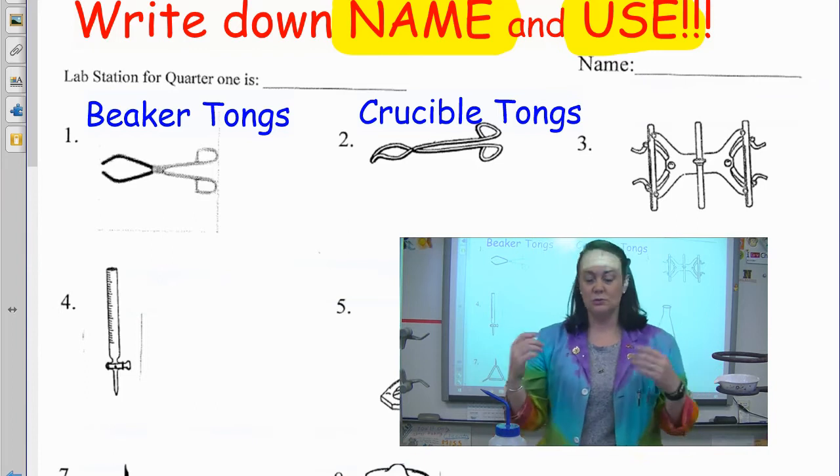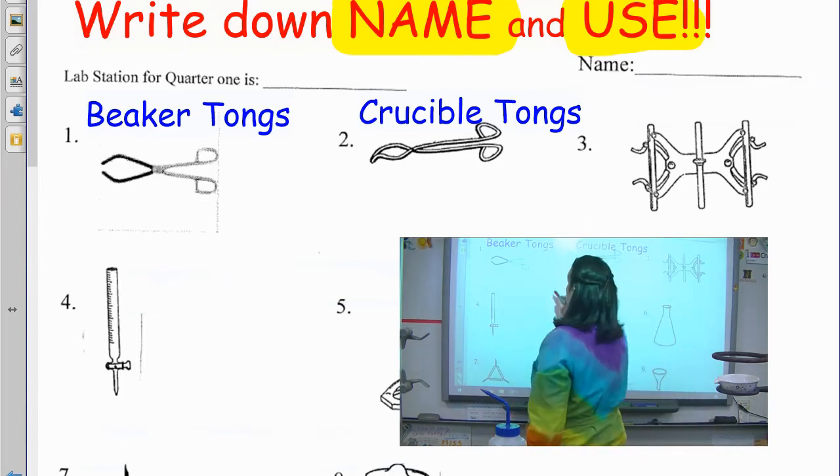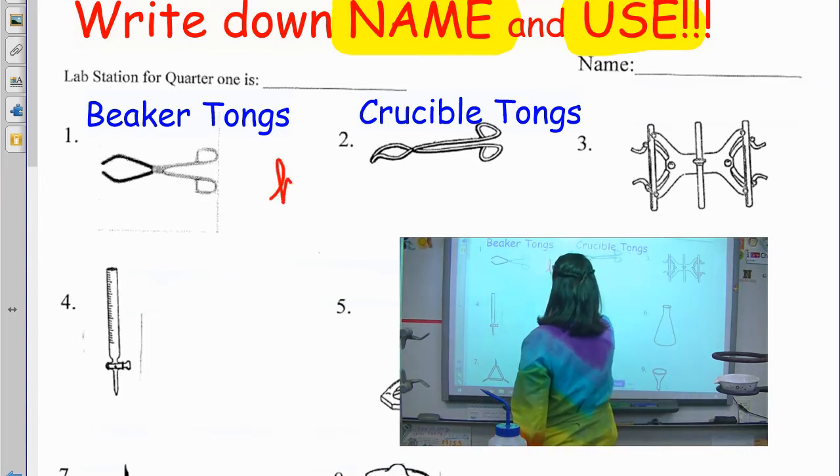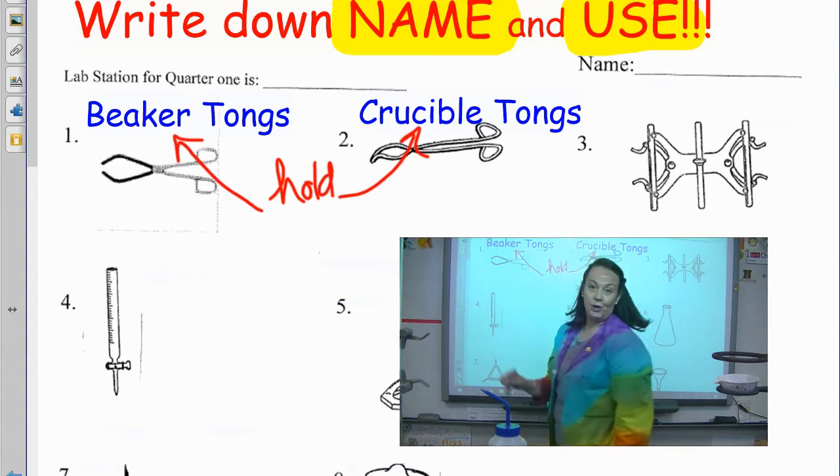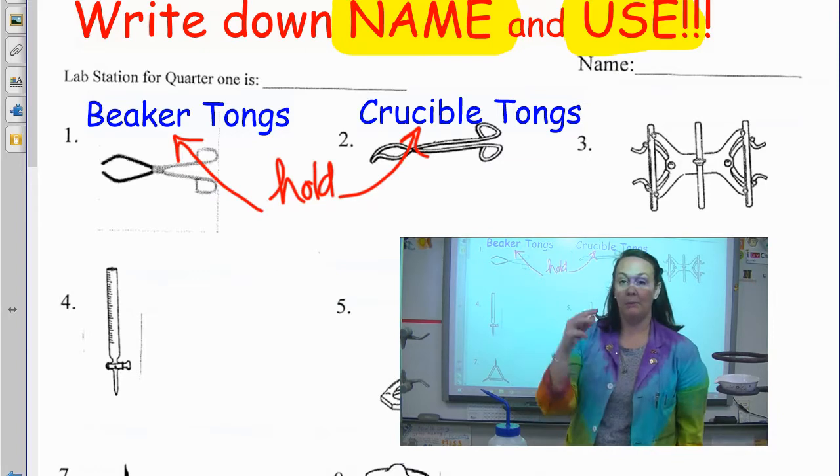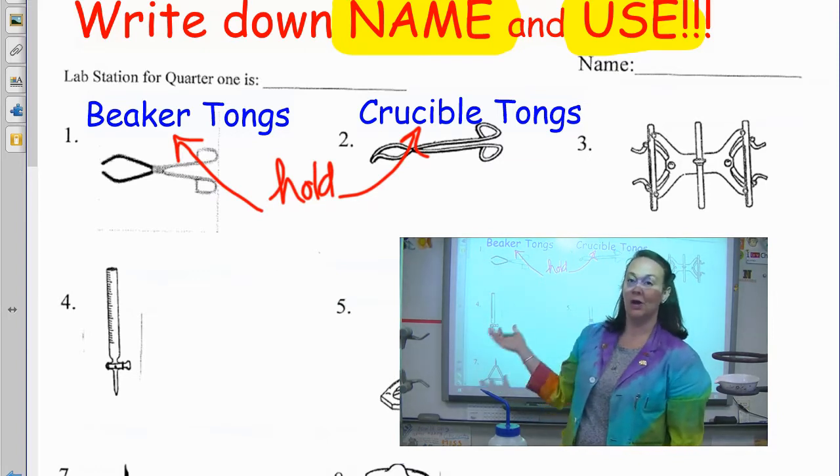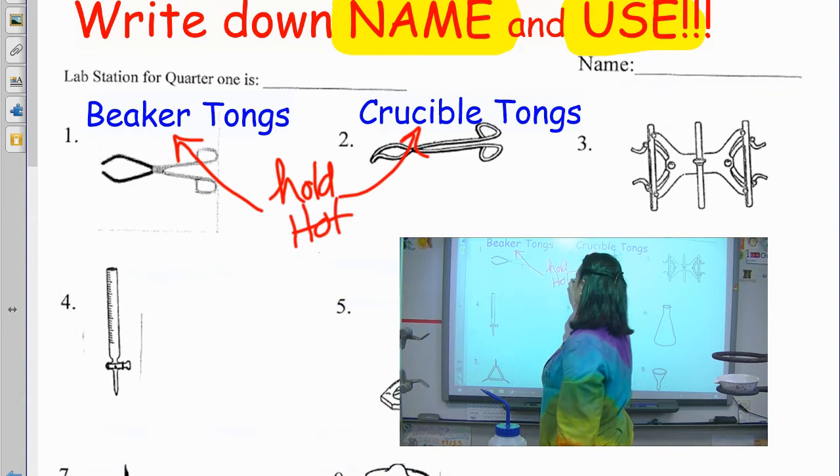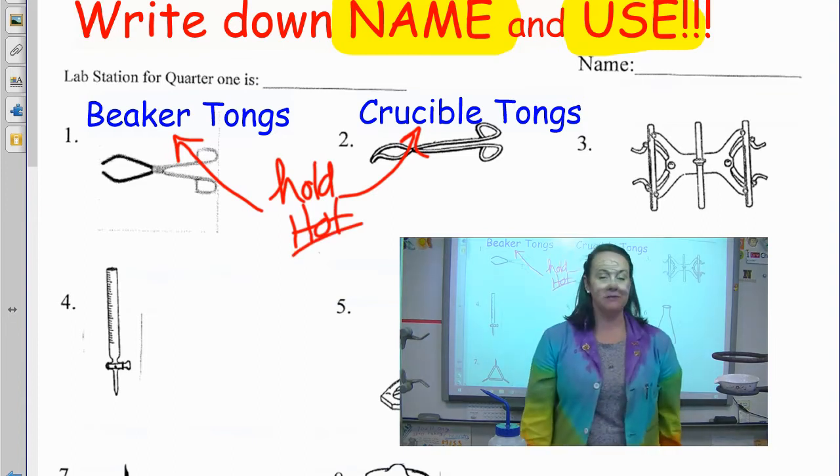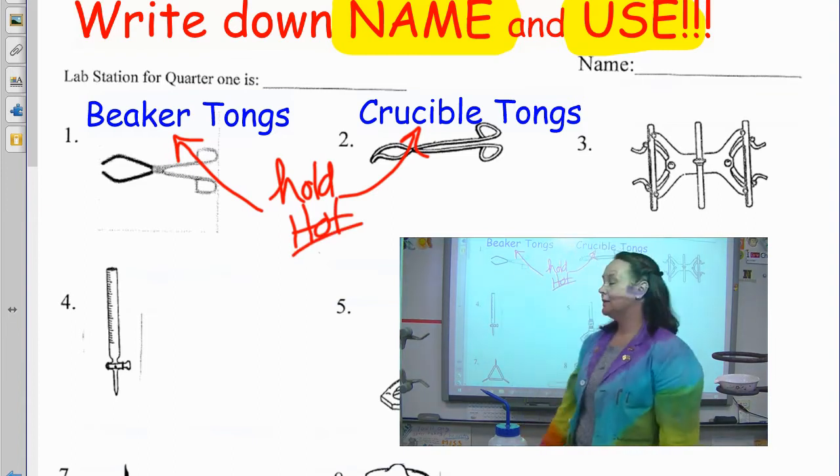So what I would write for the use for these two things, beaker tongs and crucible tongs, they hold hot either crucibles or they hold hot beakers. I'm a big paraphraser when I take notes. So they hold hot items, whatever the name is.